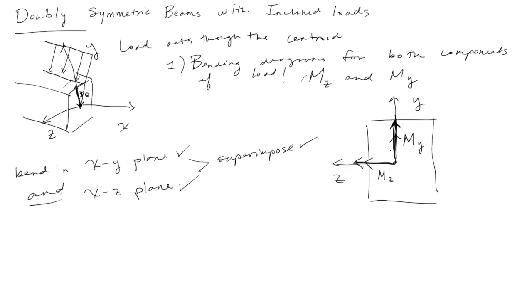Okay, the sign convention here is just the right-hand rule. This arrow would be considered a positive moment because it's acting in the positive direction of the y-axis. M sub z would be considered positive because it's acting in the positive direction of the z-axis.